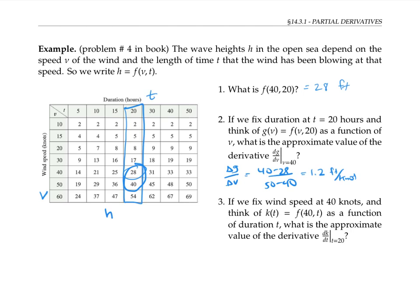That amounts to 1.2 feet per knot. If instead we look at v values, then we're looking at these two numbers. And we can calculate Δg/Δv as (28 minus 17) over (40 minus 30), which gives us 1.1 feet per knot.